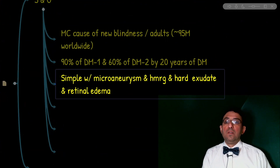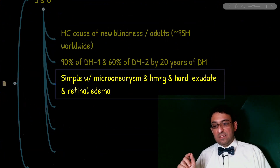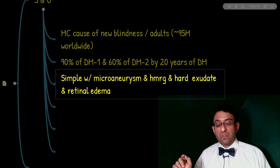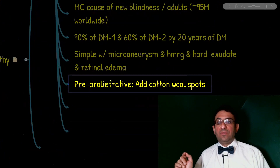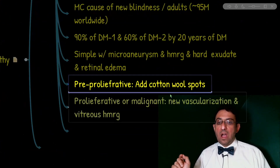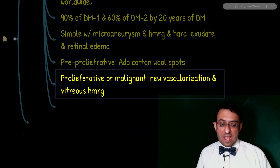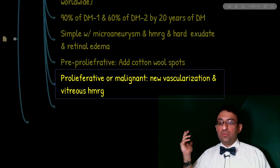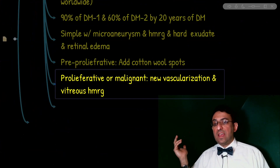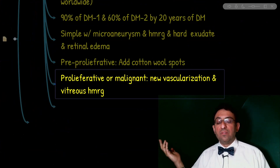Simple diabetic retinopathy shows microaneurysms, hemorrhage, hard exudate, and retinal edema — but the macula itself is not yet involved. The pre-proliferative stage is characterized by cotton-wool spots on ophthalmoscopy. In the proliferative stage, in addition to previous changes, there is neovascularization and vitreous hemorrhage — remember 'V for V.' Do not confuse these with the microaneurysms and hemorrhage of the simple stage.